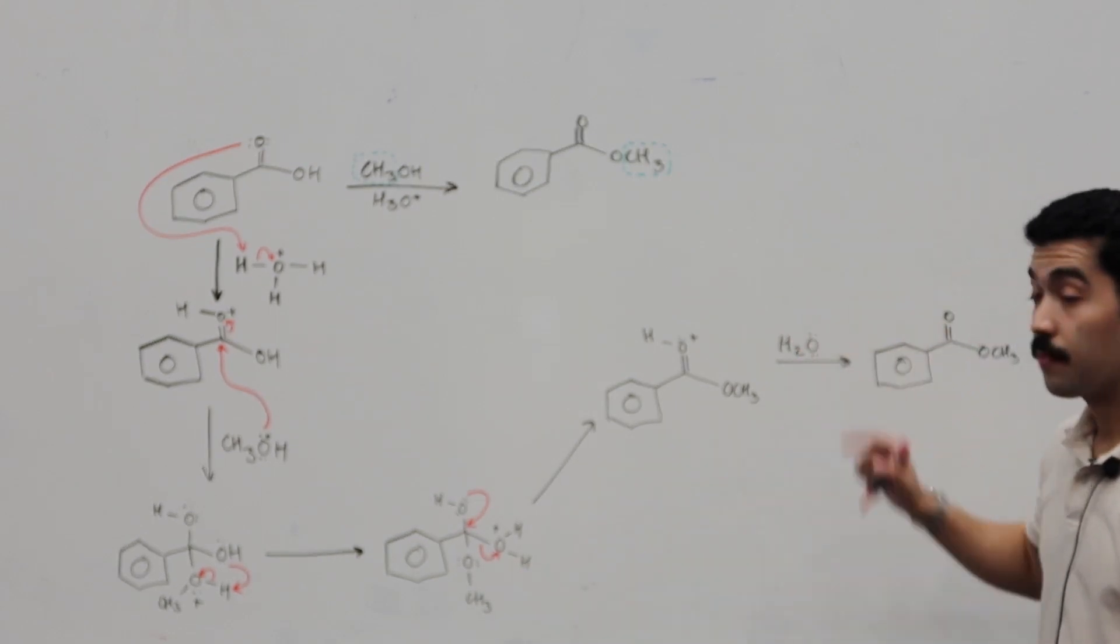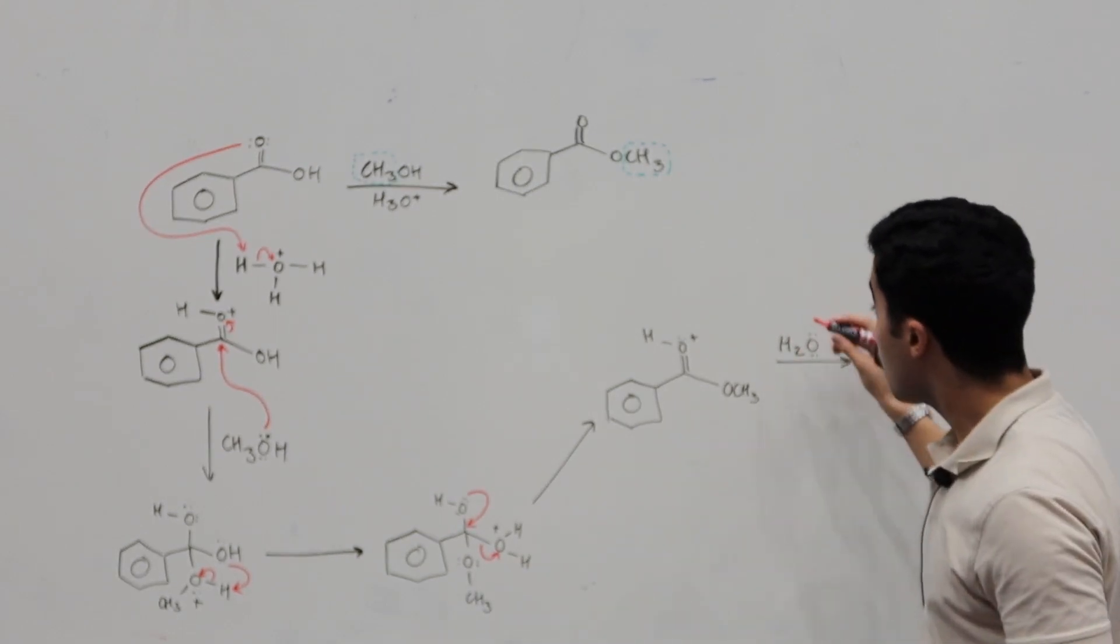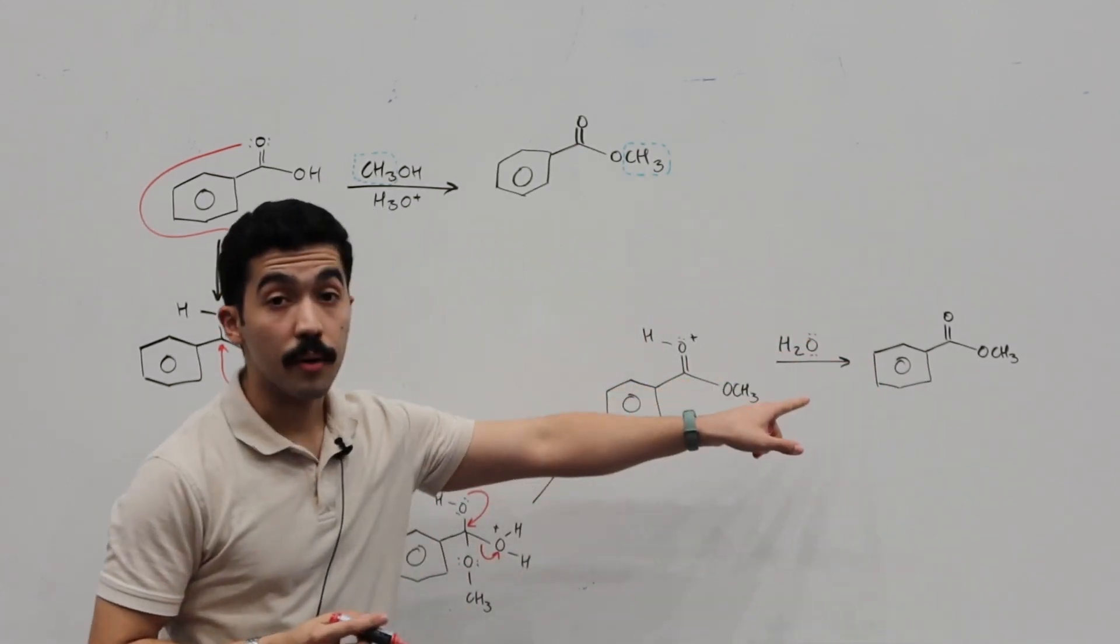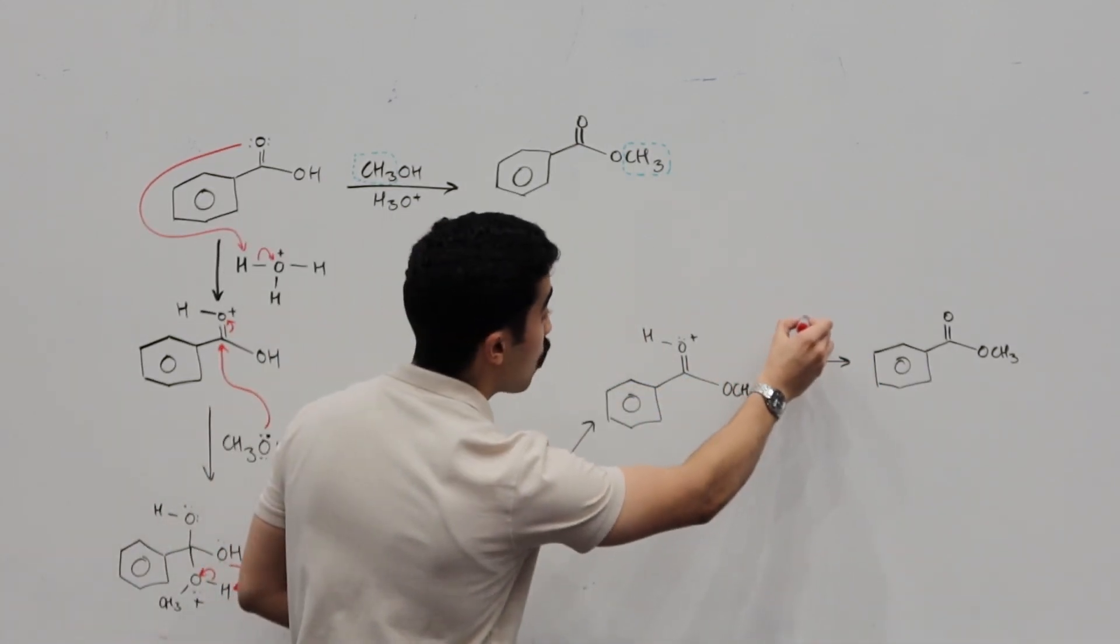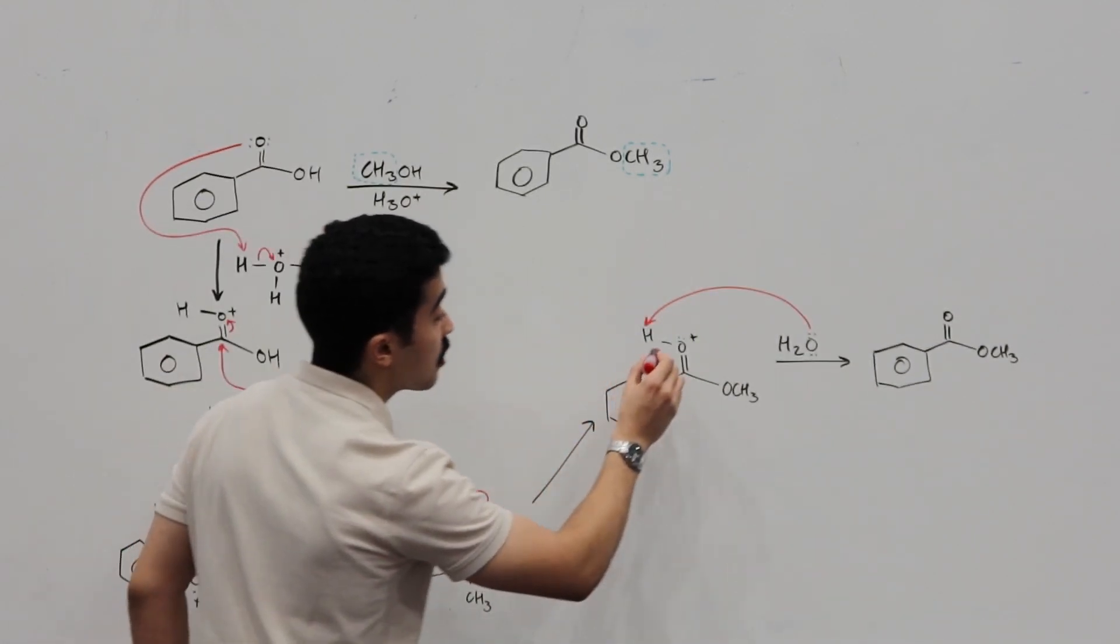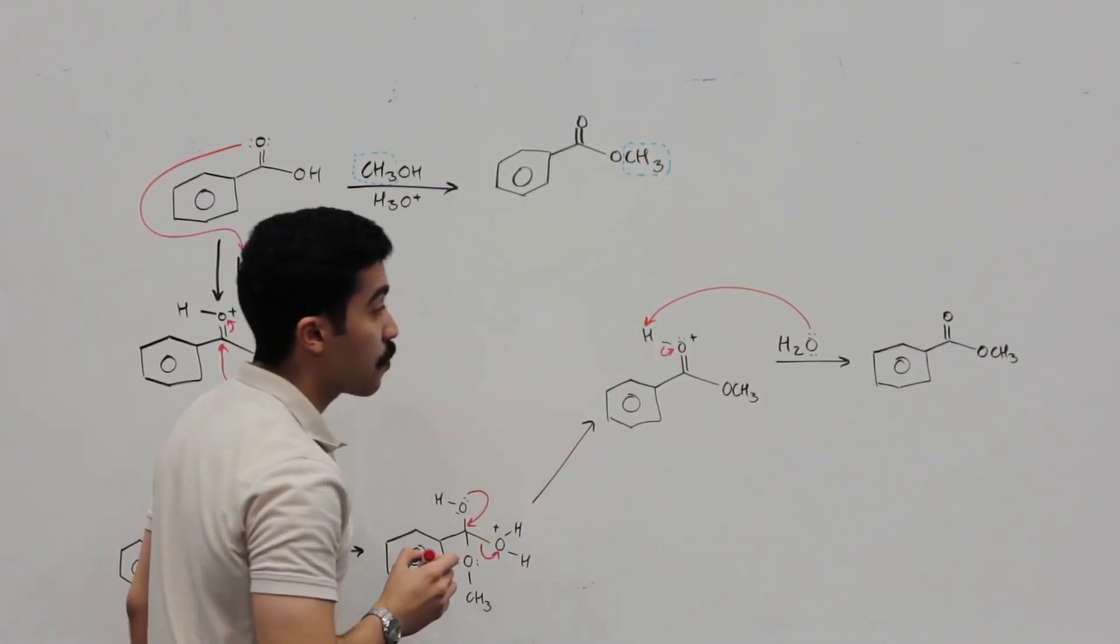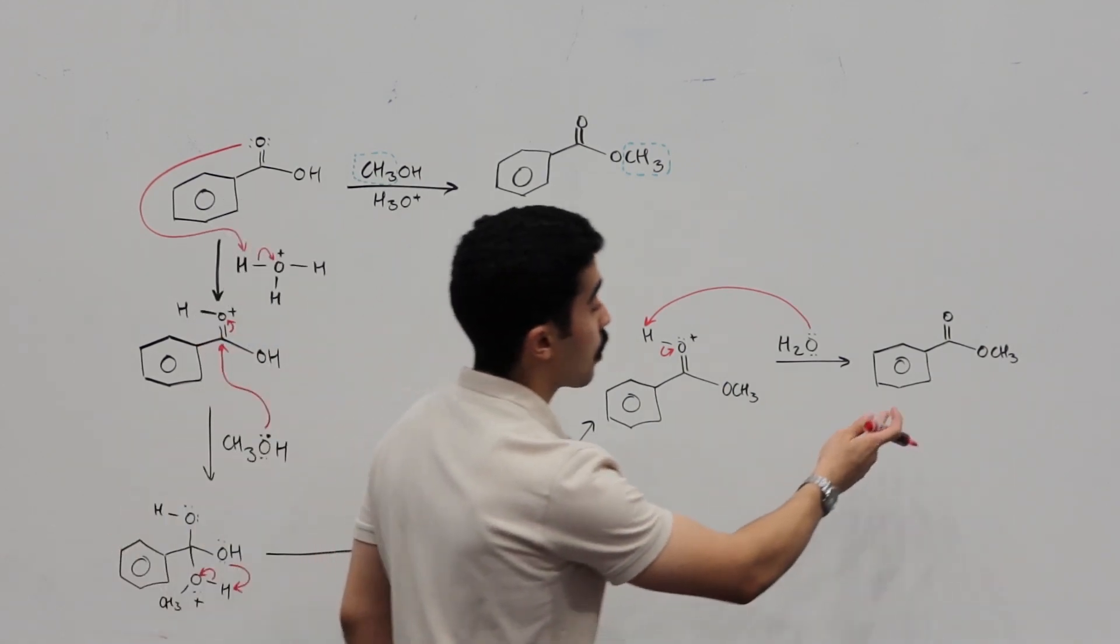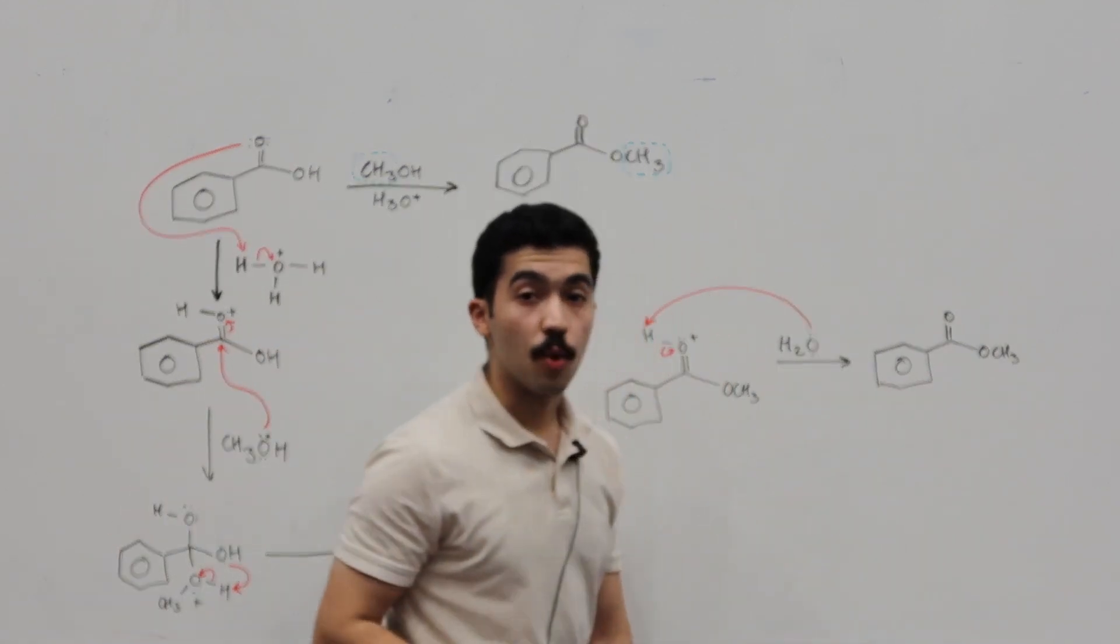H2O. So, H2O will now attack or remove this H that's attached to our carbonyl. Once it does that, these electrons will collapse towards oxygen. Once they do that, you end up with your methyl benzoate.